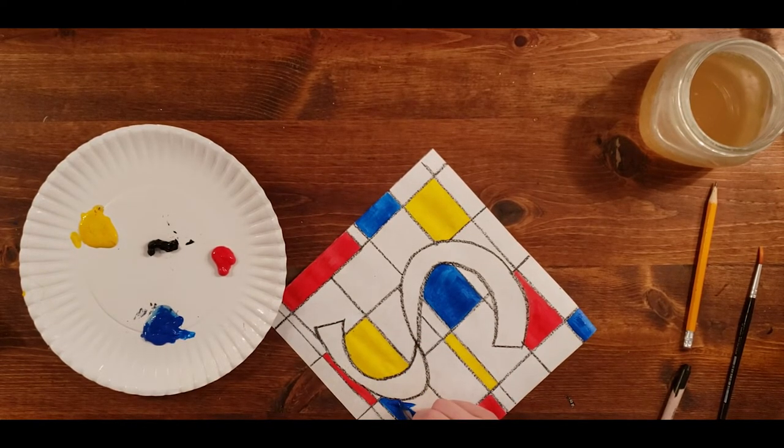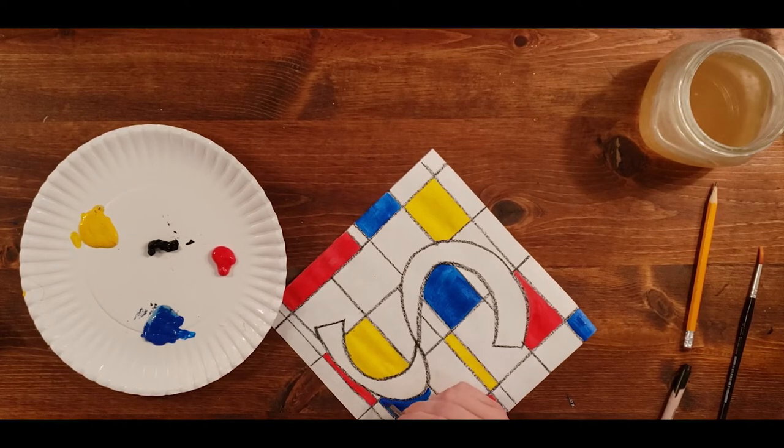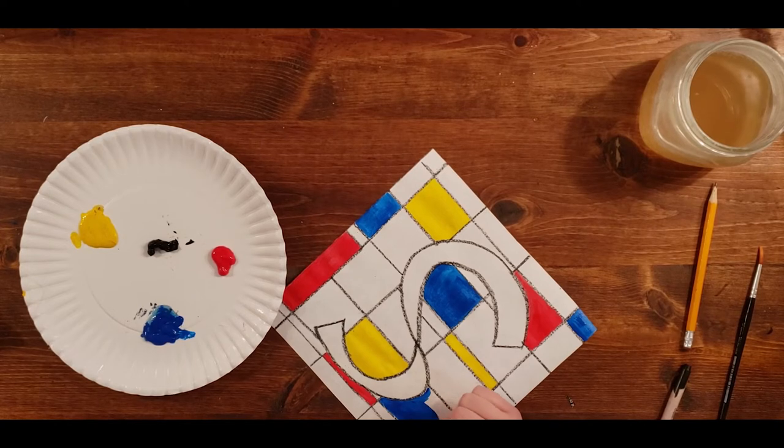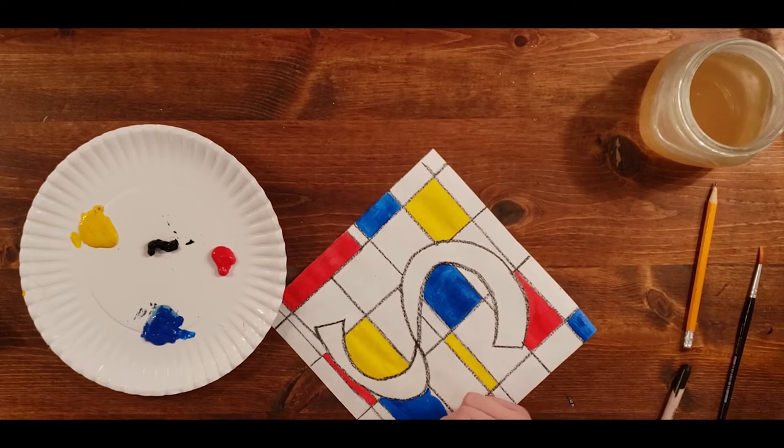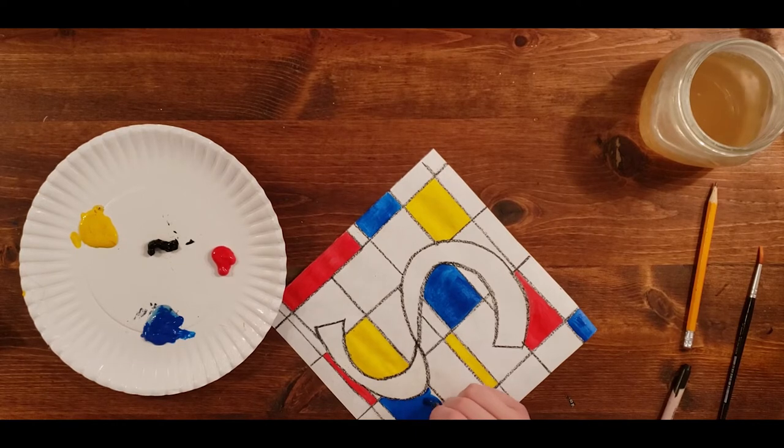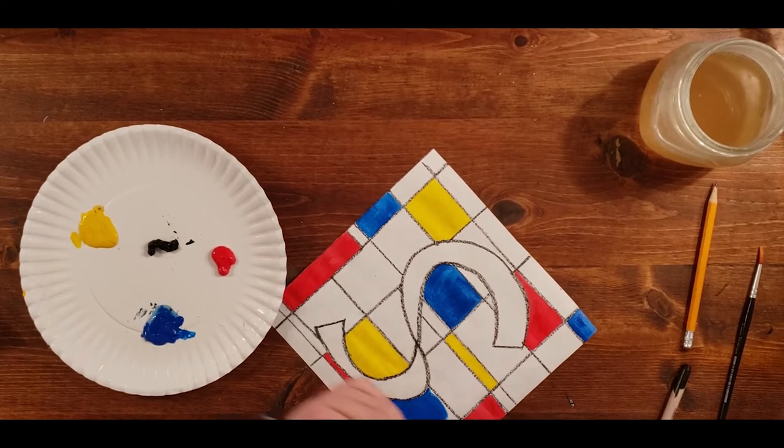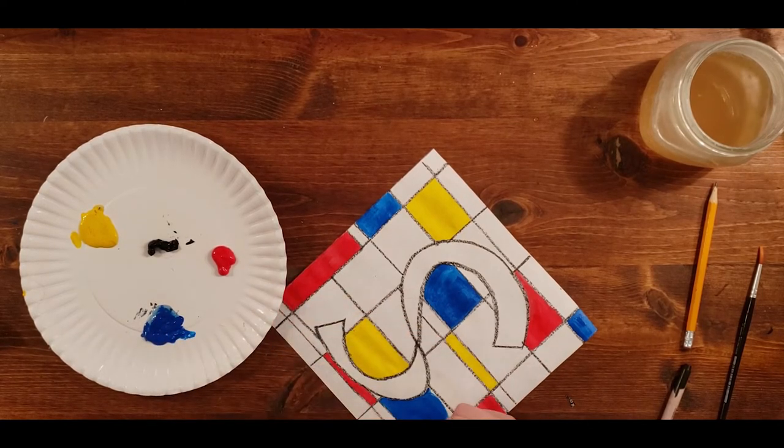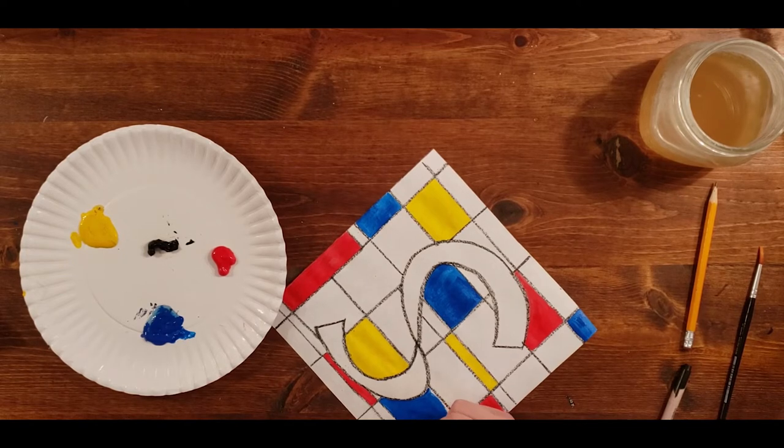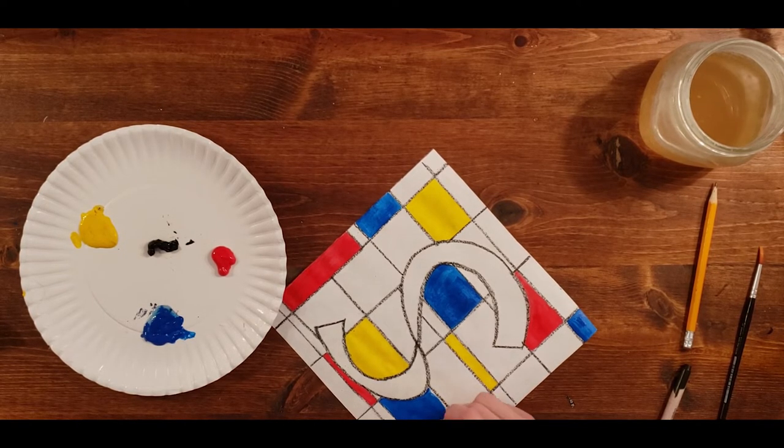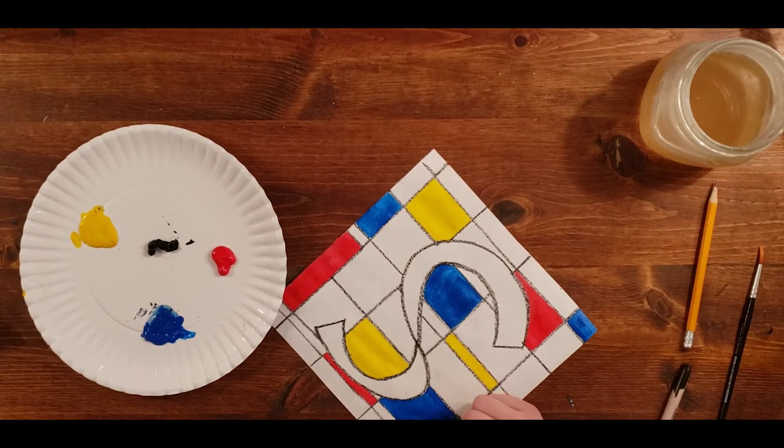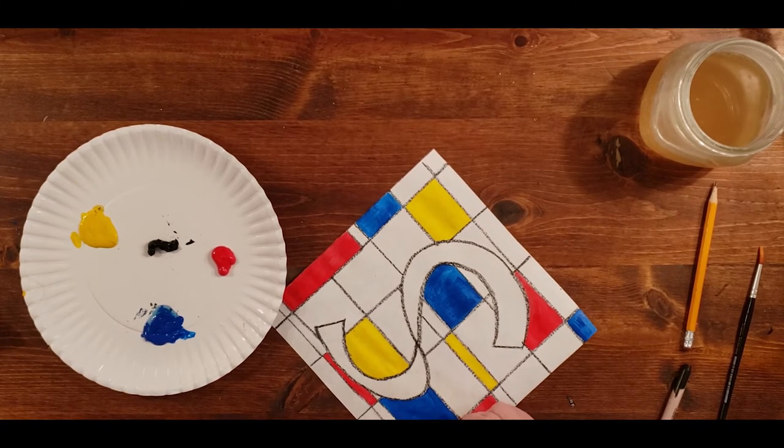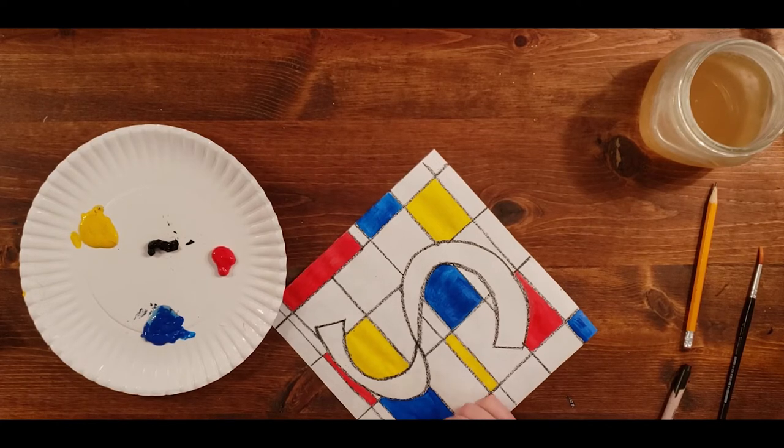De Stijl art came from the Netherlands, and it was at a time right after World War I where Europe was kind of in shambles. People really weren't sure if life could go on like it had before, and quite frankly, what had just happened to them. So this was a time where people really kind of looked at themselves, looked at the world around them, and thought, what can we do to live in harmony, to make this better, so that we make sure that this never happens again.